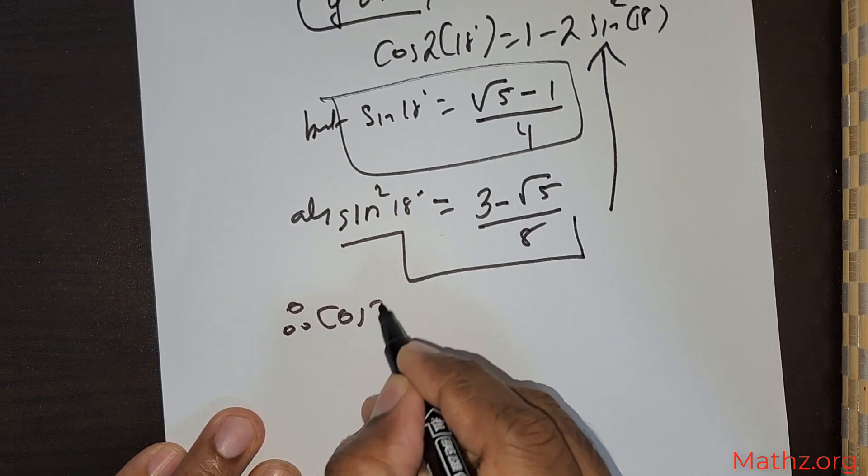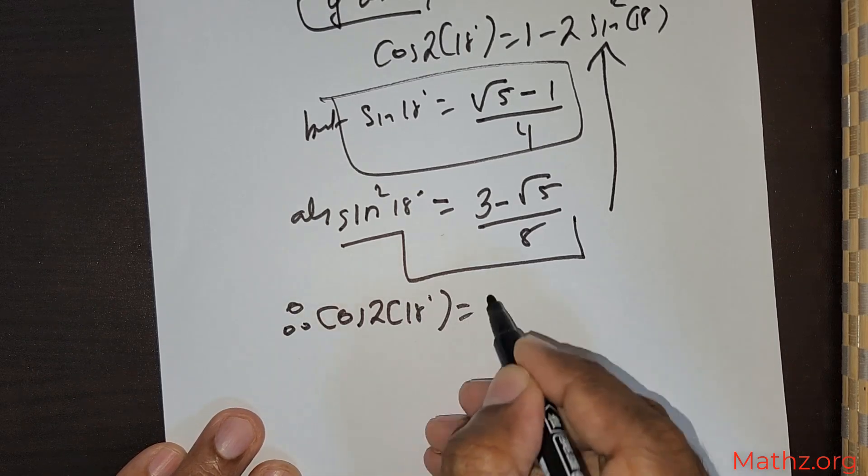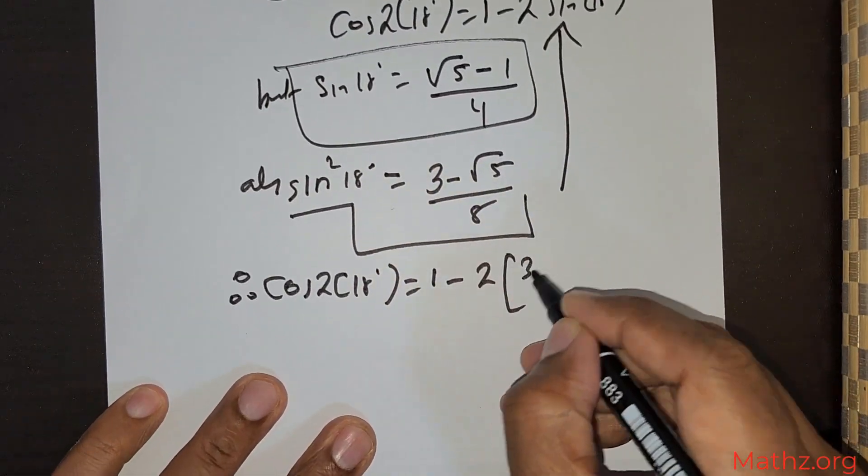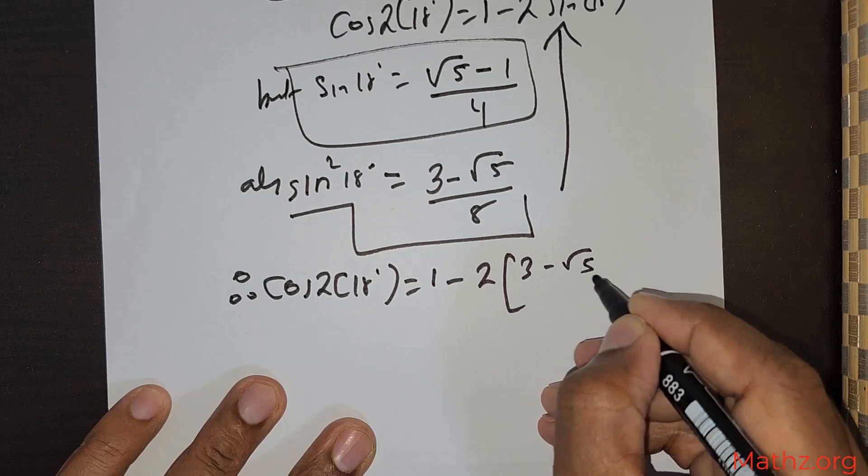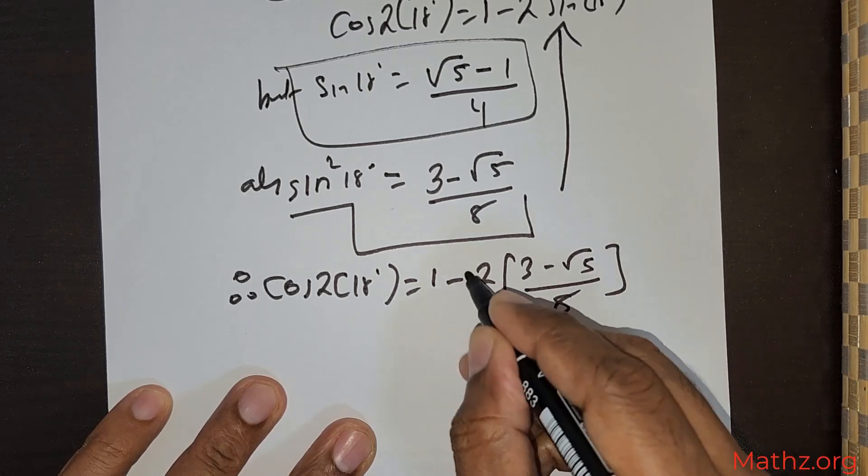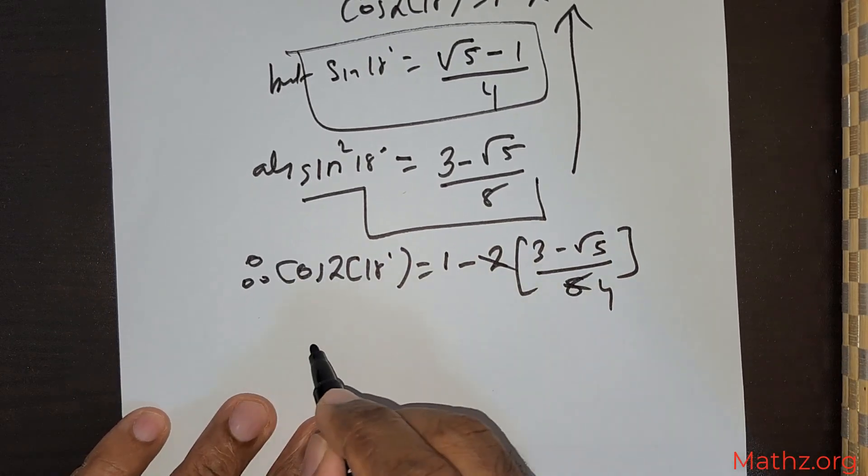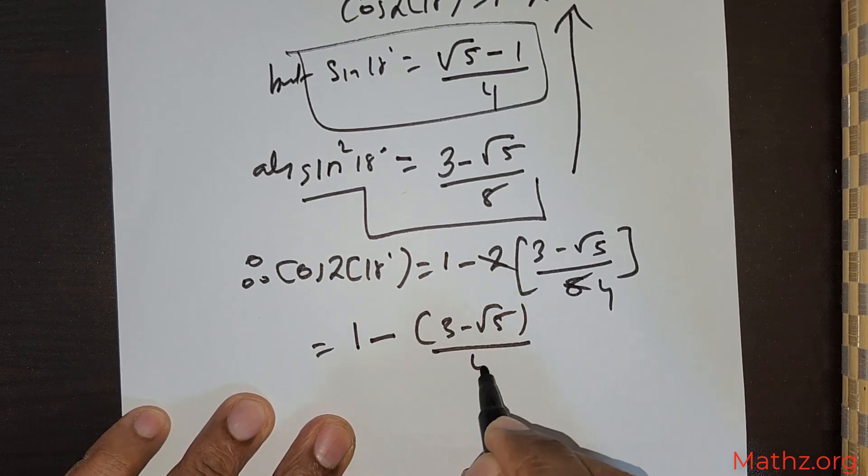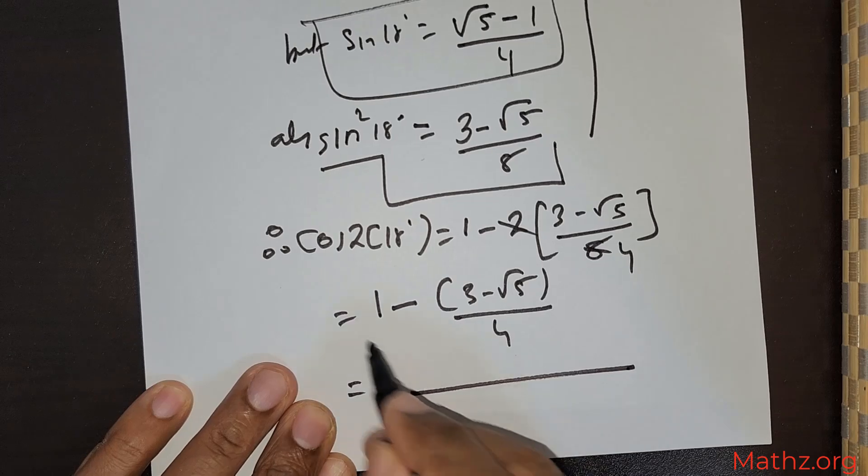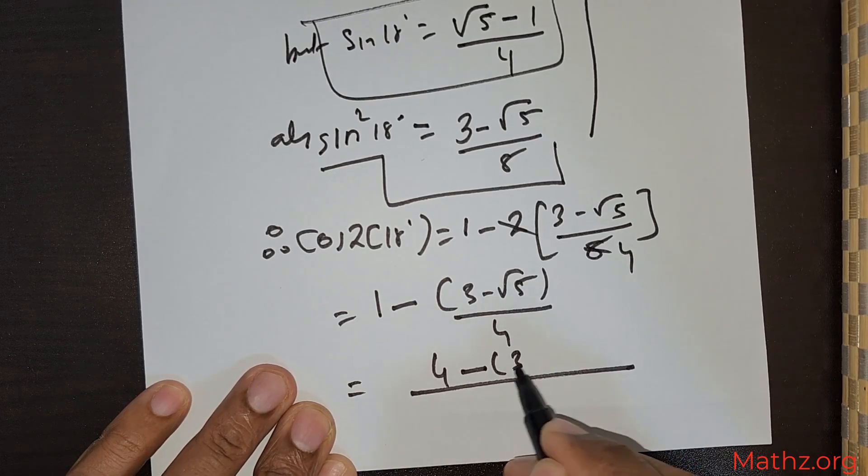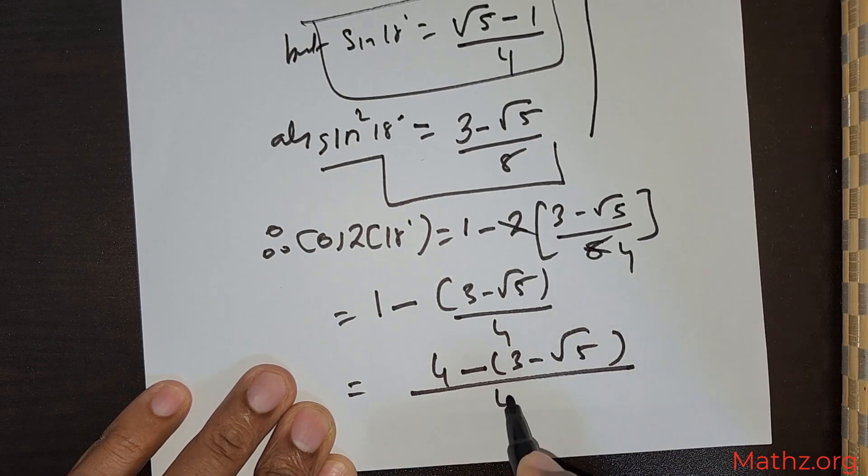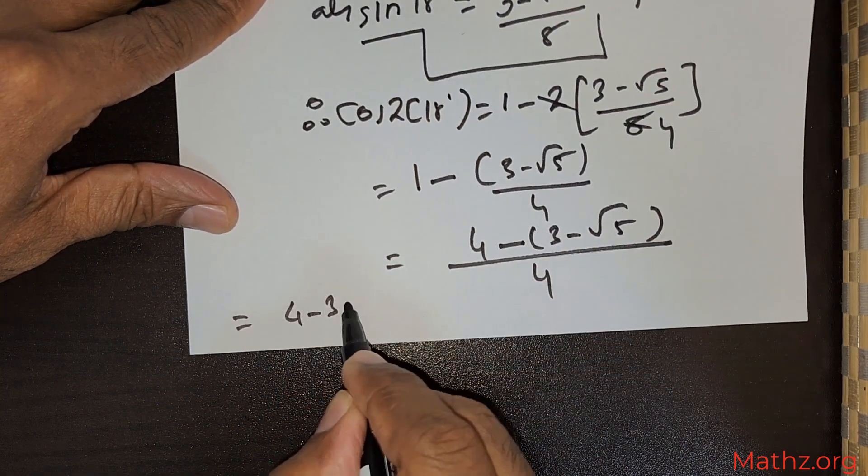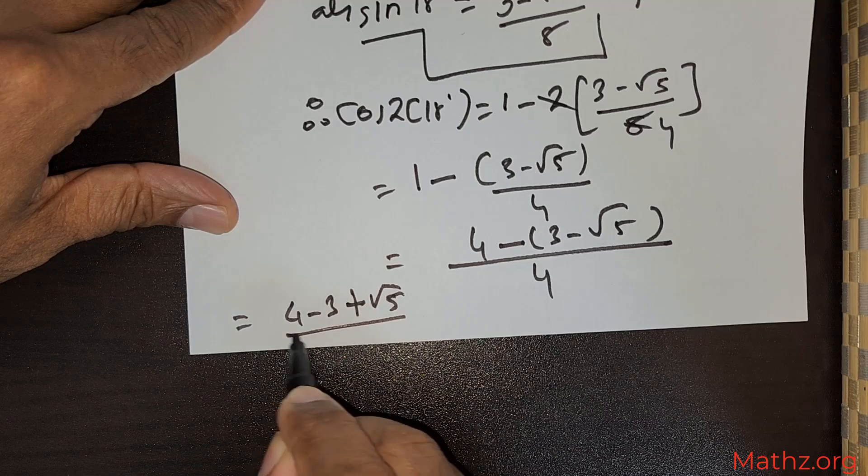Therefore cos 2(18°) = 1 - 2sin²(18°). This is (3 - √5)/8. Now 2 divides here 4 times, so you get 1 - (3 - √5)/4. Taking the LCM, you get [4 - (3 - √5)]/4. This is going to be (4 - 3 + √5)/4.